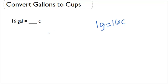Now let's look at our question. 16 gallons is equal to how many cups? Now right from our formula it might be easy to think that the answer is going to be 1, but we have to be careful here. You have to be thinking about which label is with which number. We have 16 gallons here — that's a lot. It's not equal to 1 cup because cup is the smaller unit.